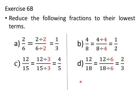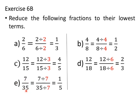Next: Reduce 7 by 35 to its lowest term. The HCF is 7. Thus, 7 divided by 7 upon 35 divided by 7 equals 1 upon 5. The lowest term of 7 by 35 is 1 by 5.